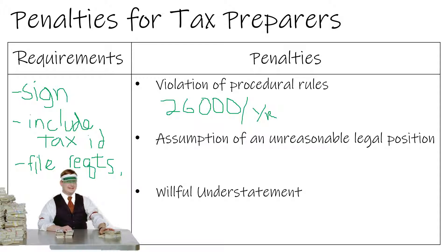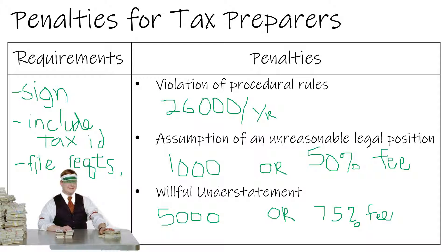A tax preparer who assumes an unreasonable legal assumption that results in an understatement of tax liability is subject to the greater of $1,000 or 50% of the filing fee charged to the client. A willful understatement of tax liability or an intentional disregard of the tax law carries a penalty of $5,000 or 75% of the fee charged to the client. This holds preparers to higher accountability and encourages them to do the right thing and avoid losing their livelihood.